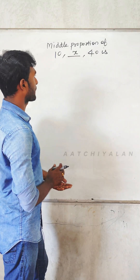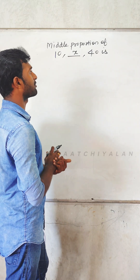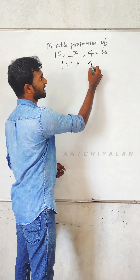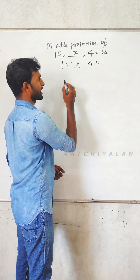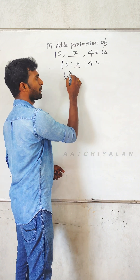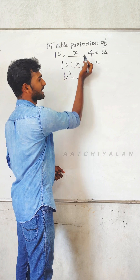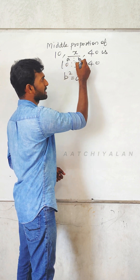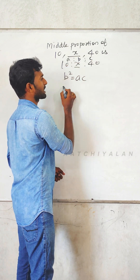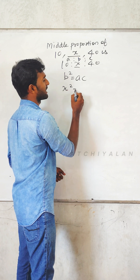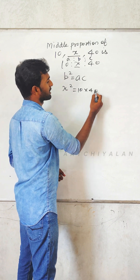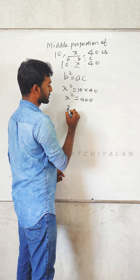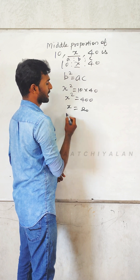Middle proportion of 10, x, 40. 10 is to x is to 40. This is the x value formula: b² is equal to ac. Then b² is x², a is 10, c is 40. Then x² is equal to 400. x value is 20.